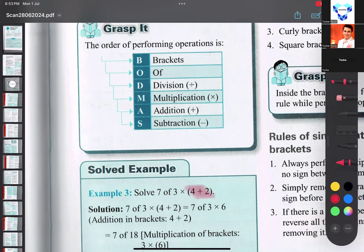No matter whatever is written before, we won't be solving that. We will be solving four plus two first. So four plus two, what is it? It's very easy. Four plus two is six.